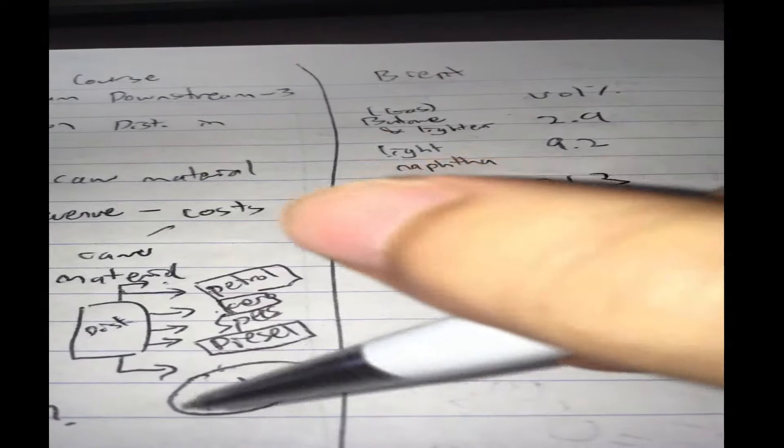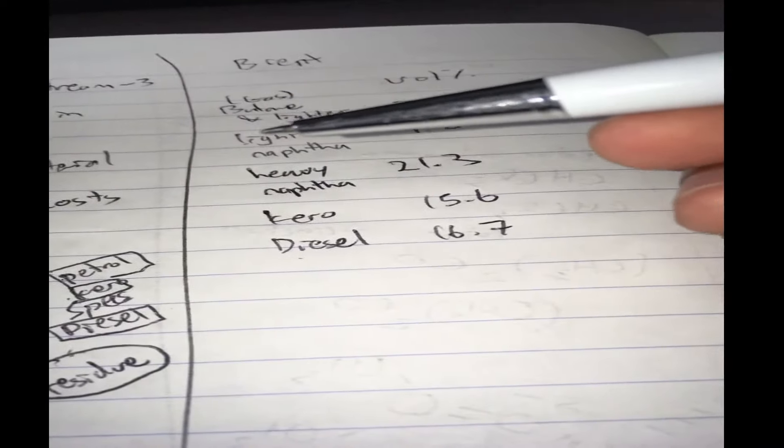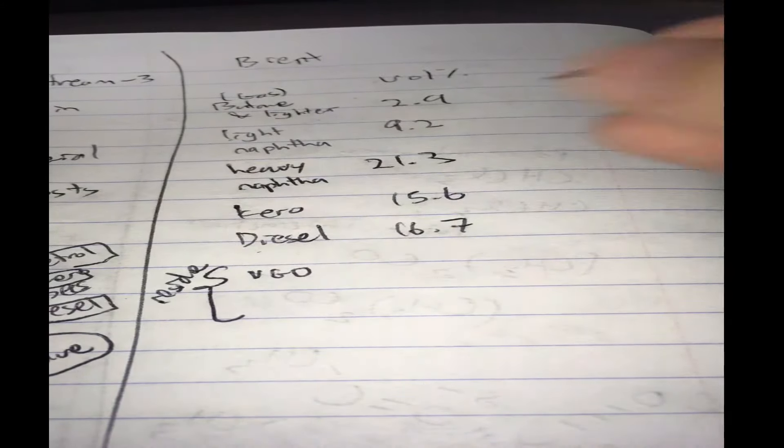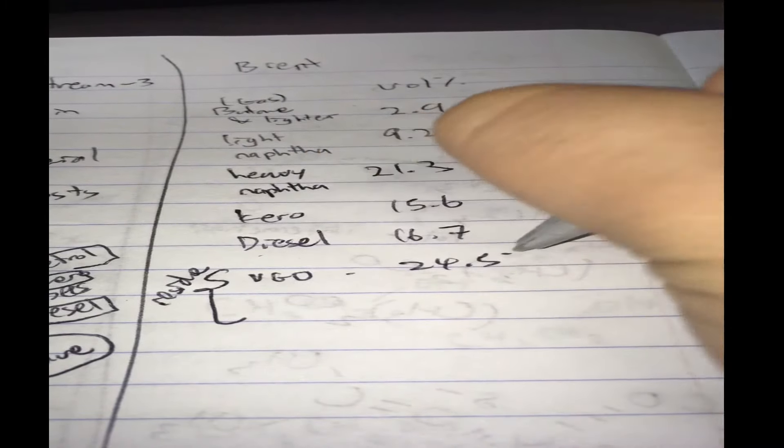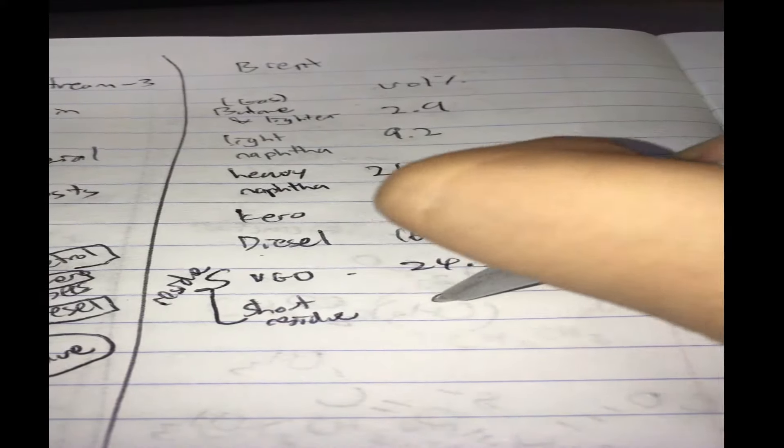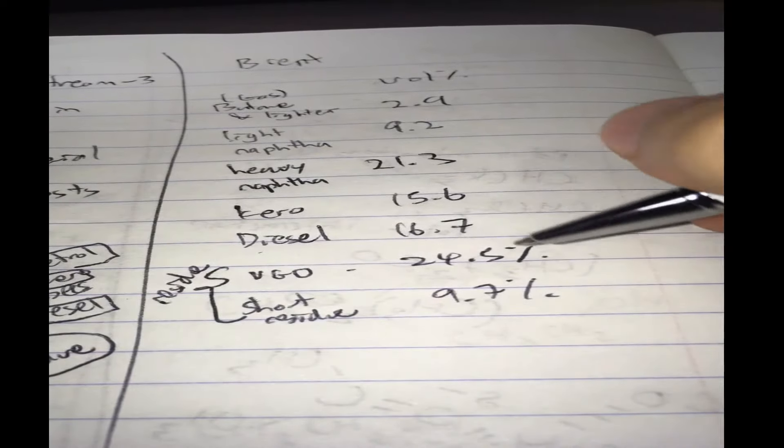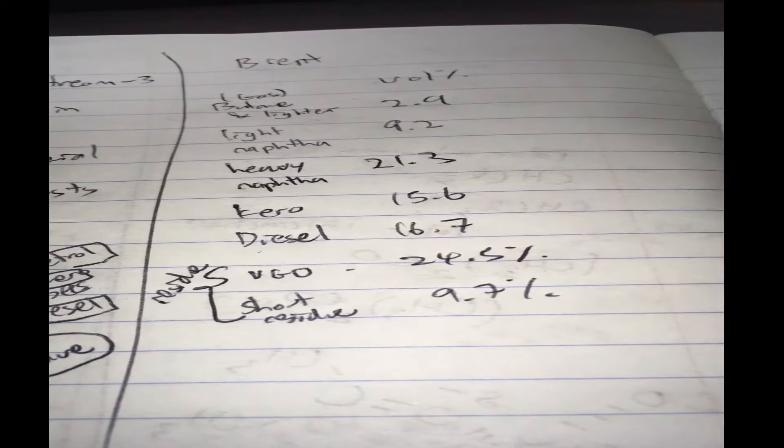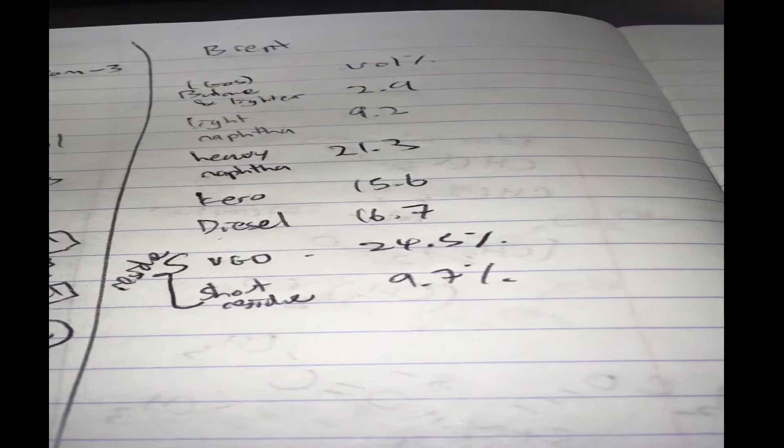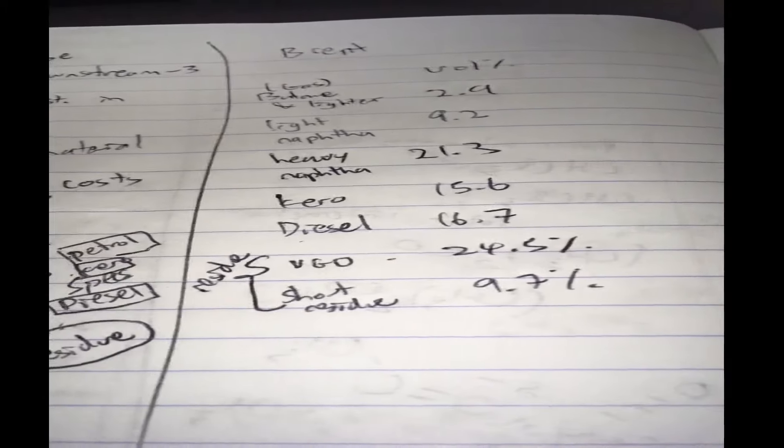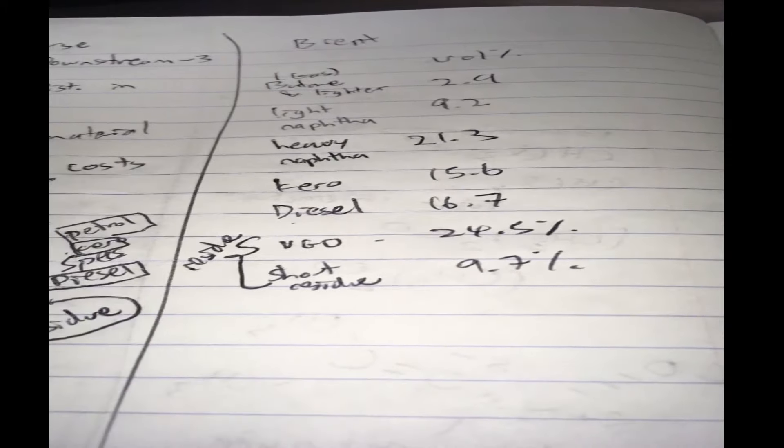And the nasty residue, which is over here. We have vacuum gas oil, which is one of the fractions of a residue, 24.5%. So where did I get these numbers from? You can actually find these numbers in the link I provide in the description. They are from ExxonMobil's website. They have lots of assays of many kinds of crude oil.